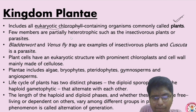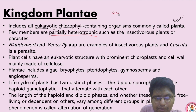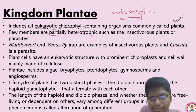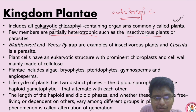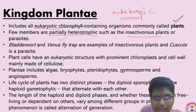Few members are partially heterotrophic — partially means half, so half they are heterotrophic. Mostly these are autotrophic; they can prepare their own food. Examples of partially heterotrophic plants are insectivorous plants such as Venus flytrap and bladderwort. And Cuscuta is an example of a parasitic plant.